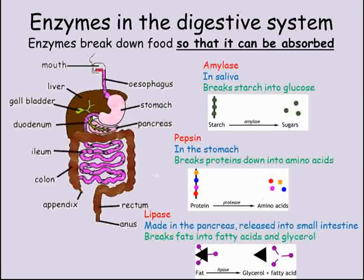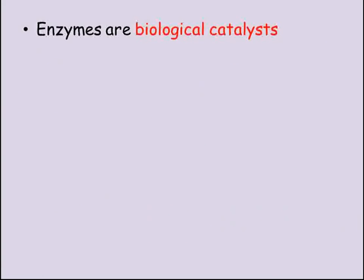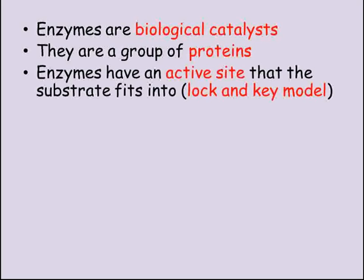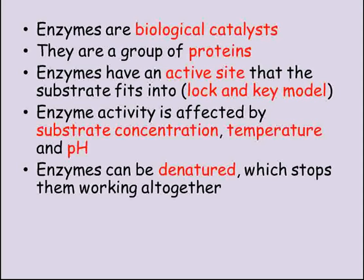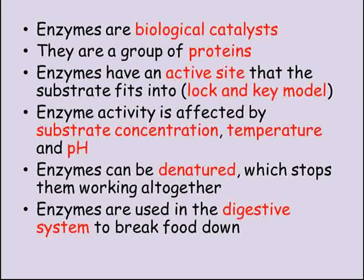So, enzymes are biological catalysts — they're proteins with an area called an active site that the substrate fits into. This explanation of why enzymes are specific is called the lock and key model. Substrate concentration, temperature, and pH all affect how well an enzyme works. If the temperature goes too high, or the pH goes too high or too low, the enzyme can be denatured, which will stop it working. Enzymes are especially important in the digestive system, where a range of enzymes help break down food so that it can be absorbed.